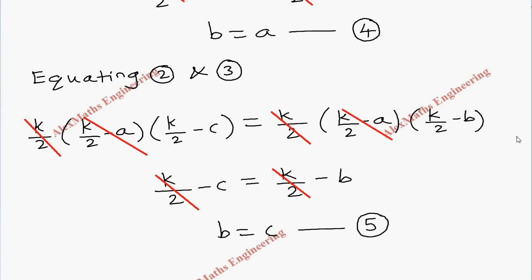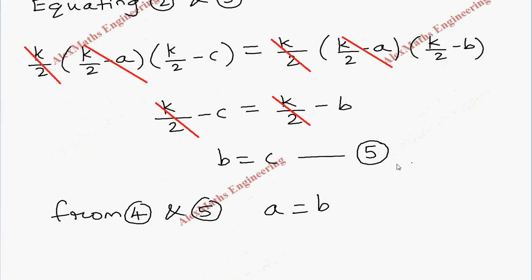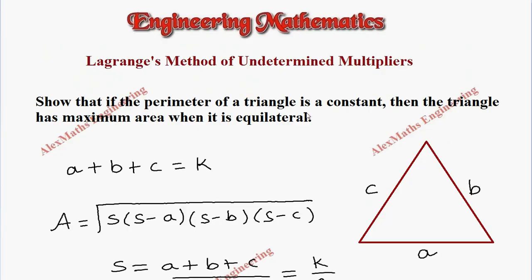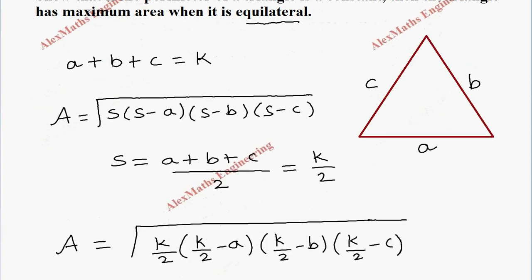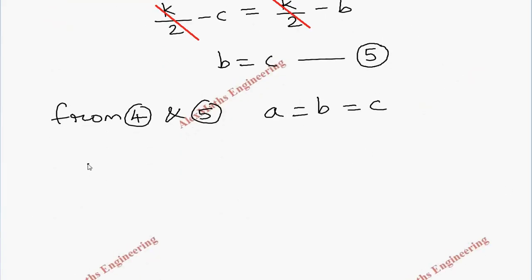From equations 4 and 5, we know A equals B and B equals C, so all three sides are equal. As per the question, we had to show that if the perimeter of a triangle is constant, then the triangle has maximum area when it is equilateral. Since we have proved A equals B equals C, the triangle is equilateral. Hence proved.